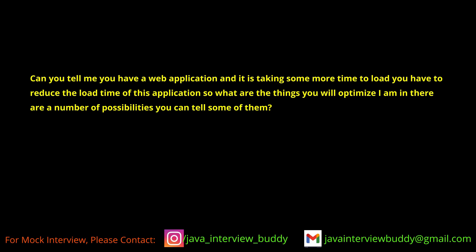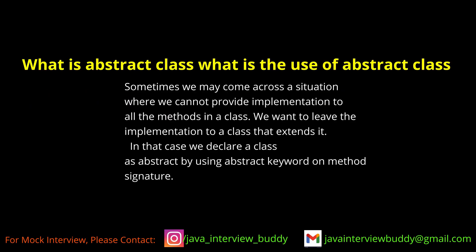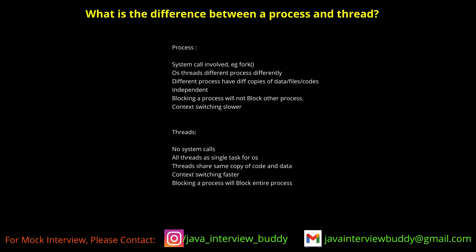What is an abstract class and what is its use? An abstract class is used when we have some implementation. It has both abstract methods and non-abstract methods. If any class extends the abstract class, it must implement the abstract methods of that abstract class.